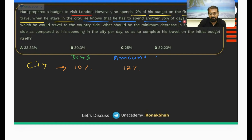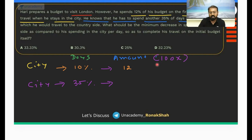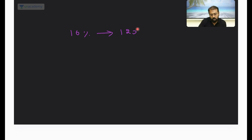He has to spend another 35% of the days in the city itself. So when he stays in the city for another 35% of the days — for 10% of days, 12x amount is consumed. Suppose his total budget was 100x, so he spent 12x. For another 35% of the days, he's going to spend 42x.